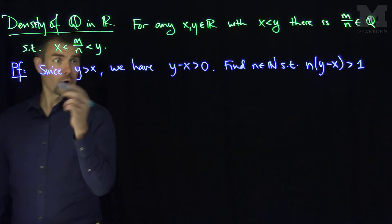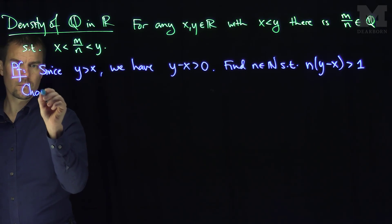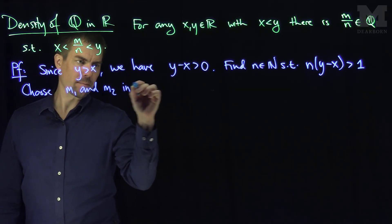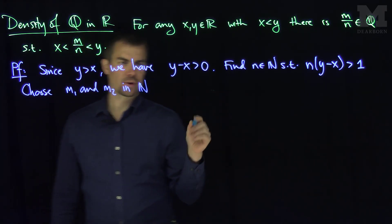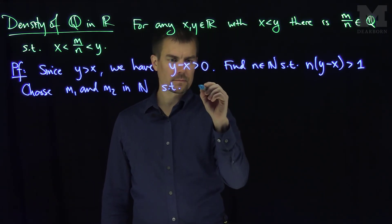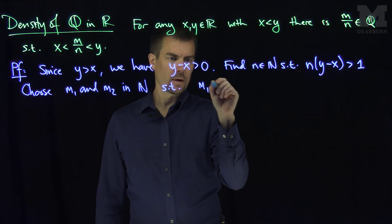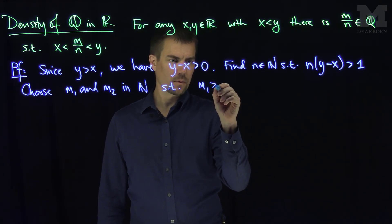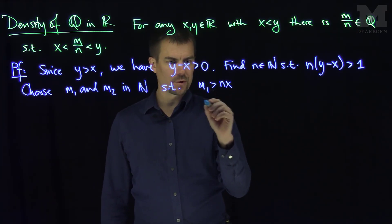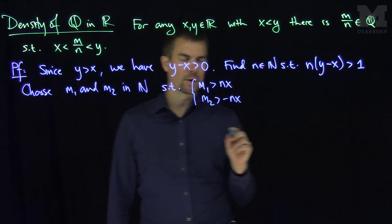Now, we can also similarly choose m1 and m2 in N such that m1 is bigger than or equal to n times x, and that m2 is bigger than negative nx. We choose this pairing over here.